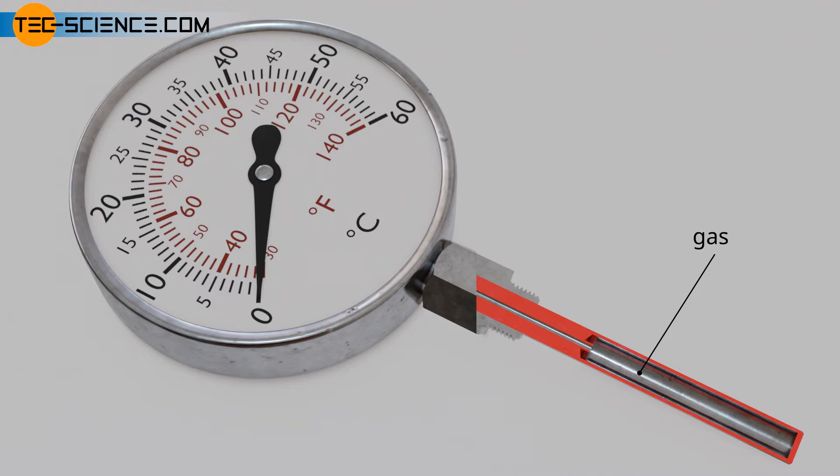For an ideal gas, the gas pressure at a constant volume is determined only by the temperature, an isochoric process.